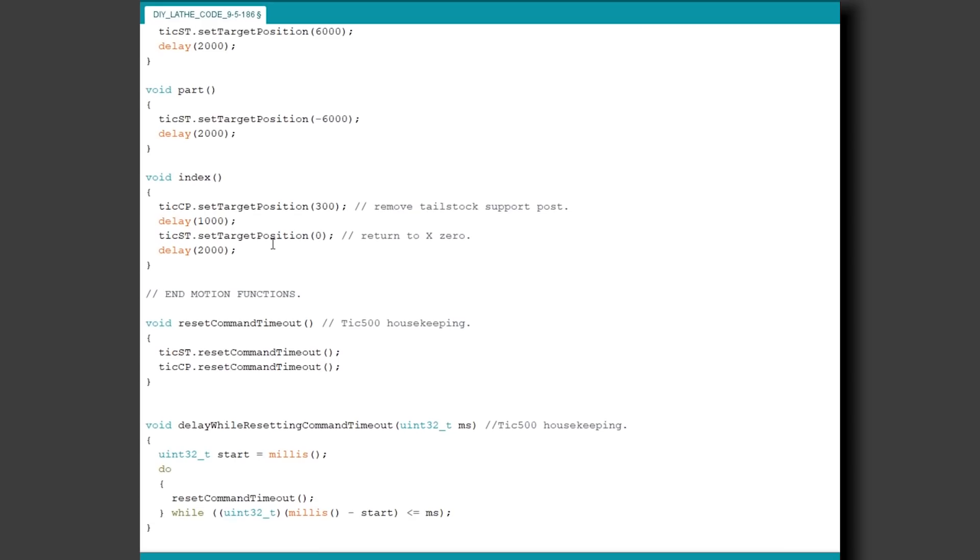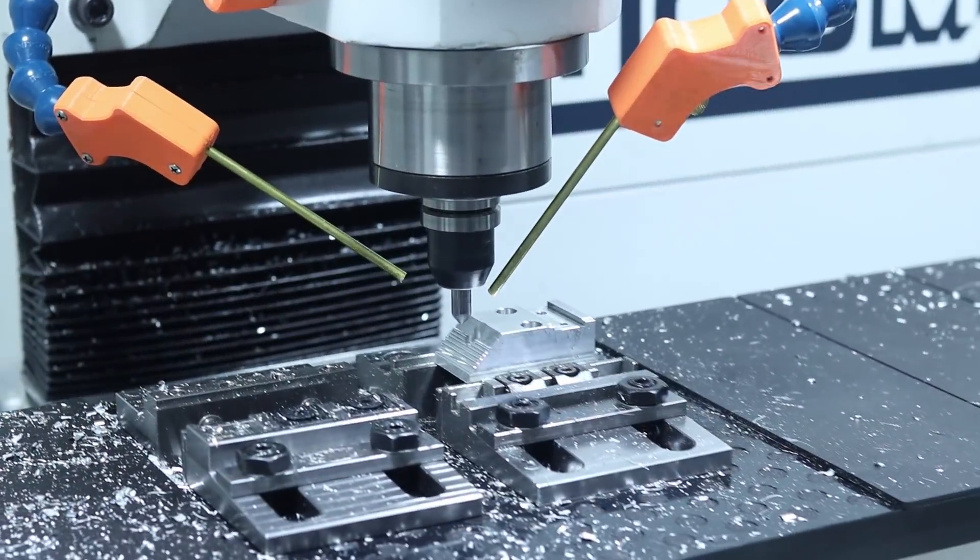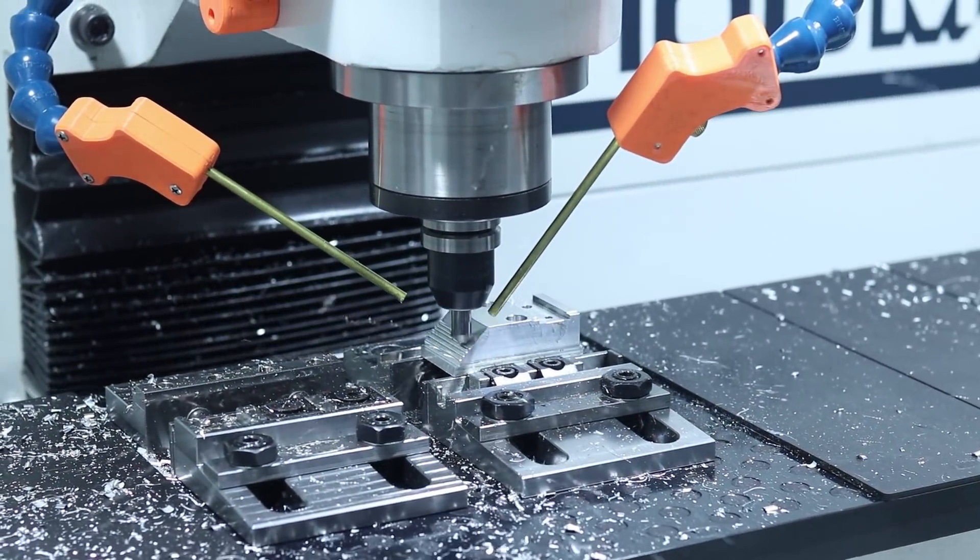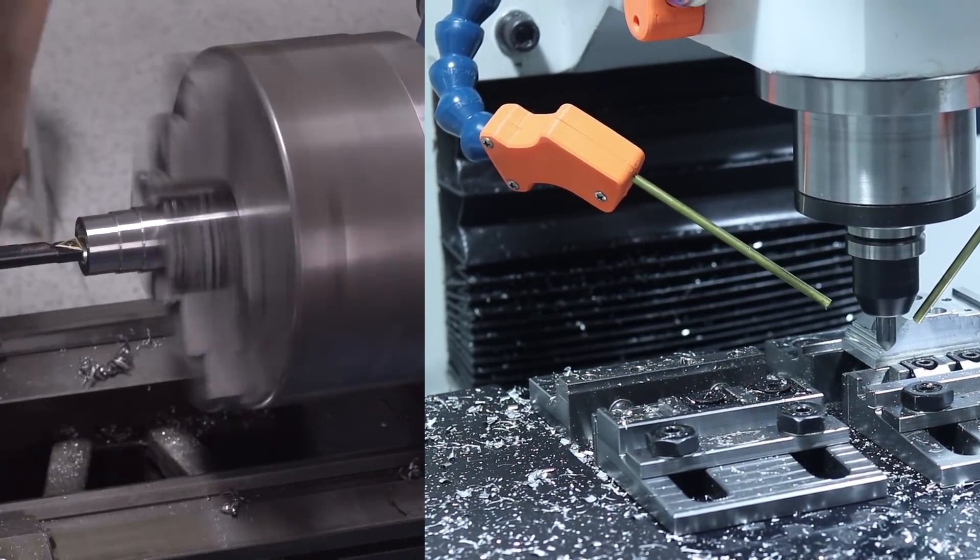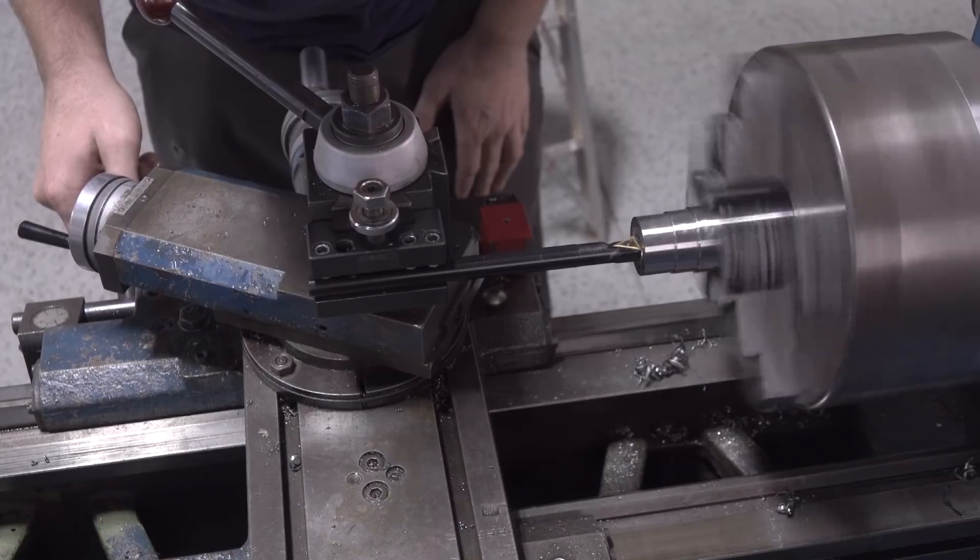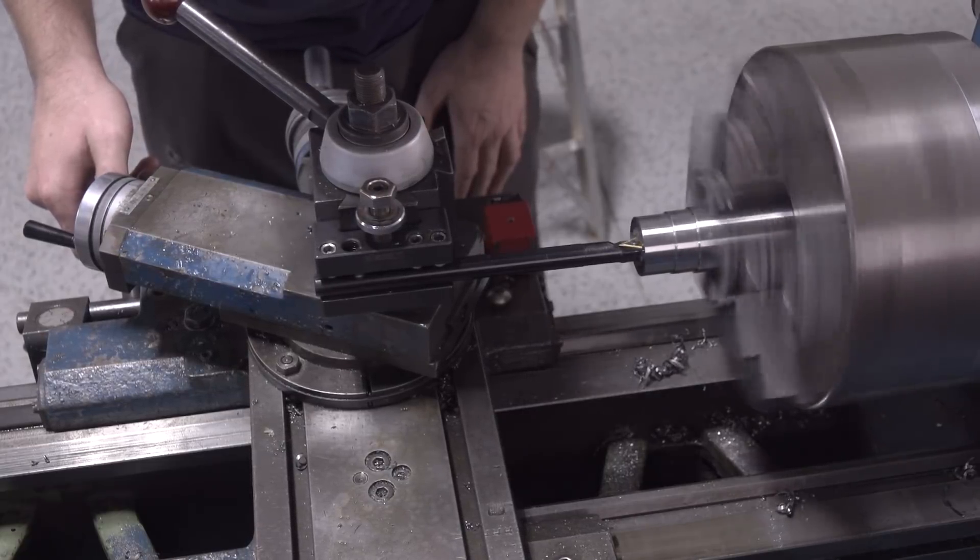Stay tuned for the next installment in which we will tackle the tool holders for the form tool and the parting tool. Lots of challenging small parts there for us to machine. And in the episode thereafter we'll wrap up construction of the actual lathe with the spindle. And at long last show the machine making some plugs. That's it for this week guys. Hope you enjoyed. Thanks for watchin'.